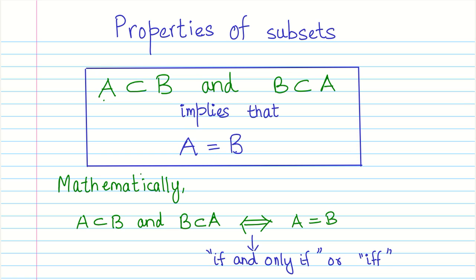That is the thing. So mathematically, we would state this as A is a subset of B and B is a subset of A. Now this thing can happen if and only if A is equal to B.